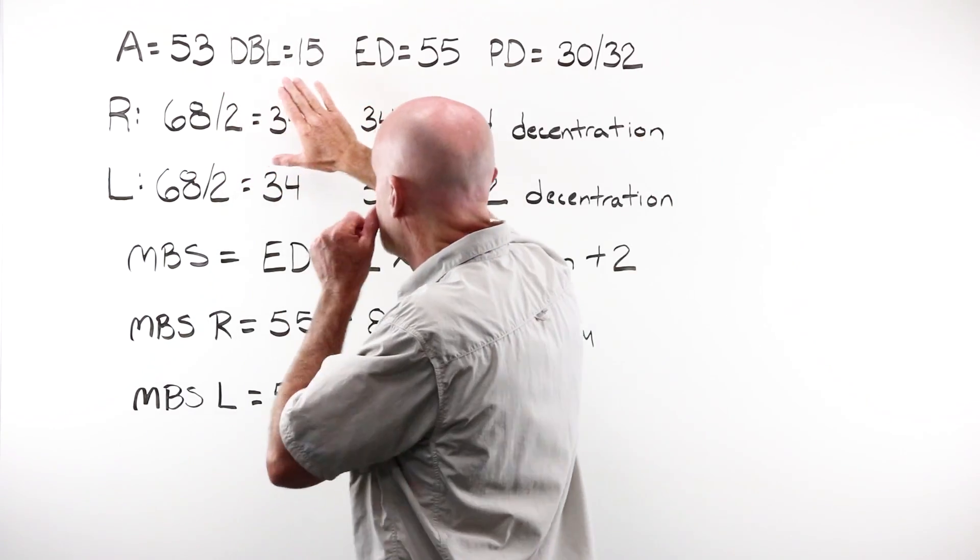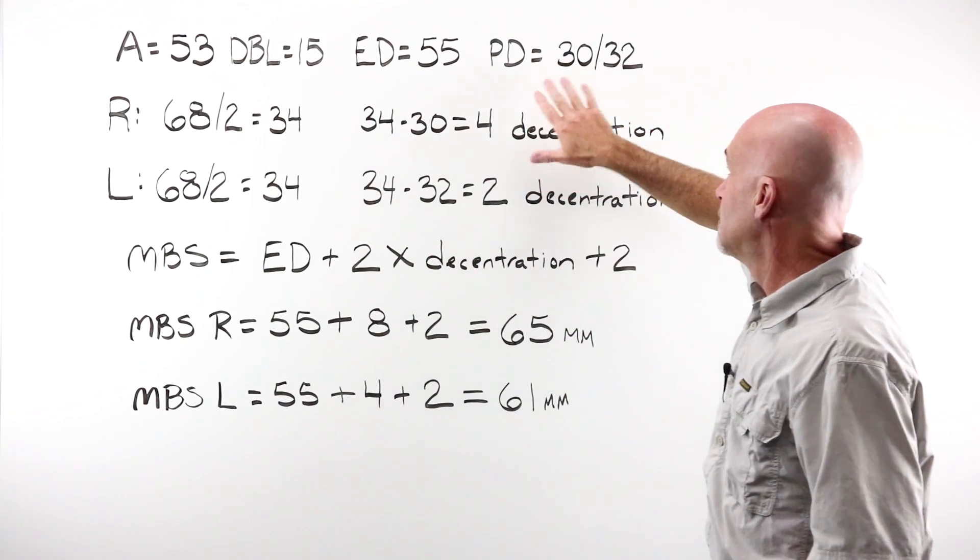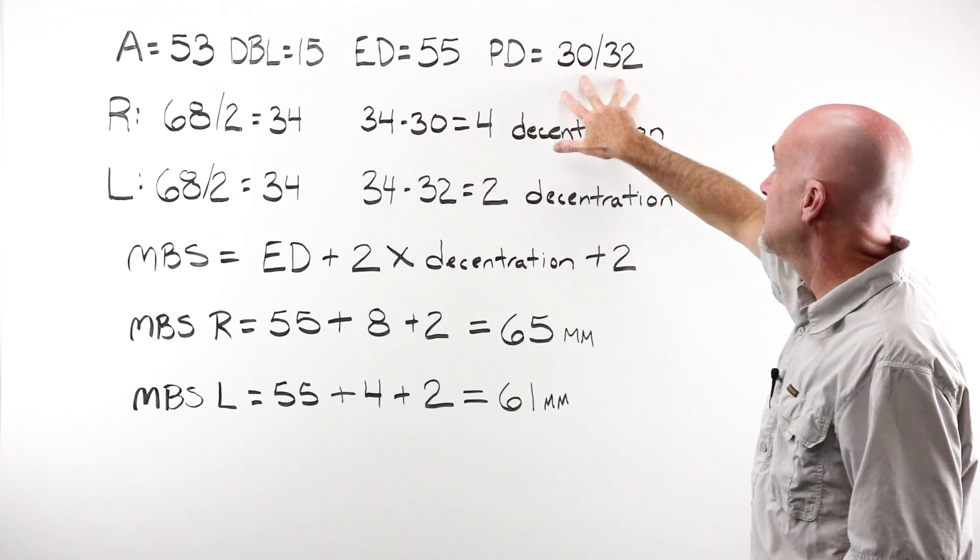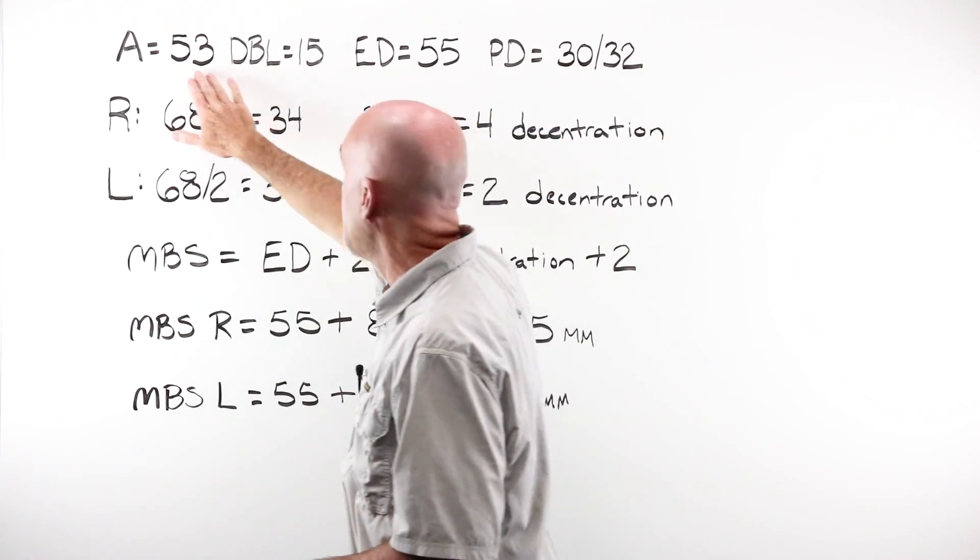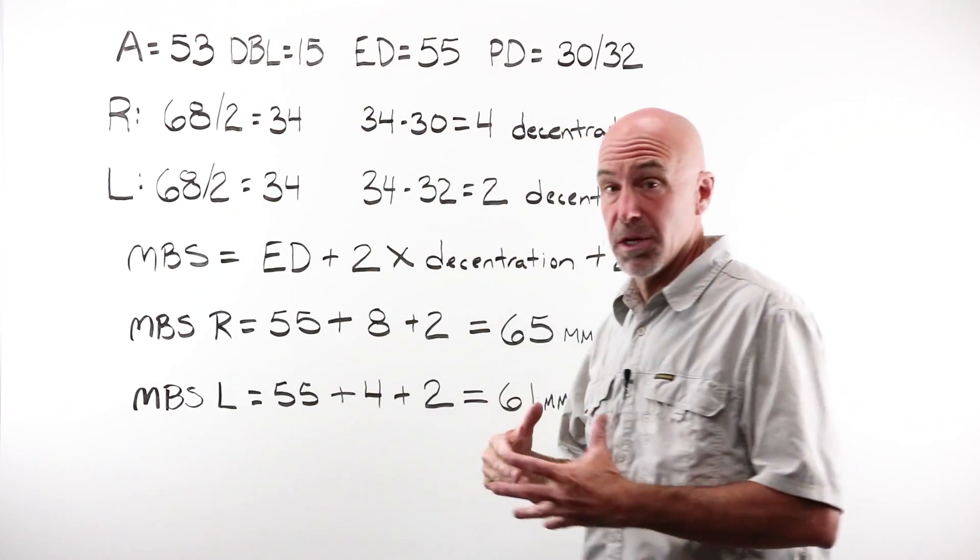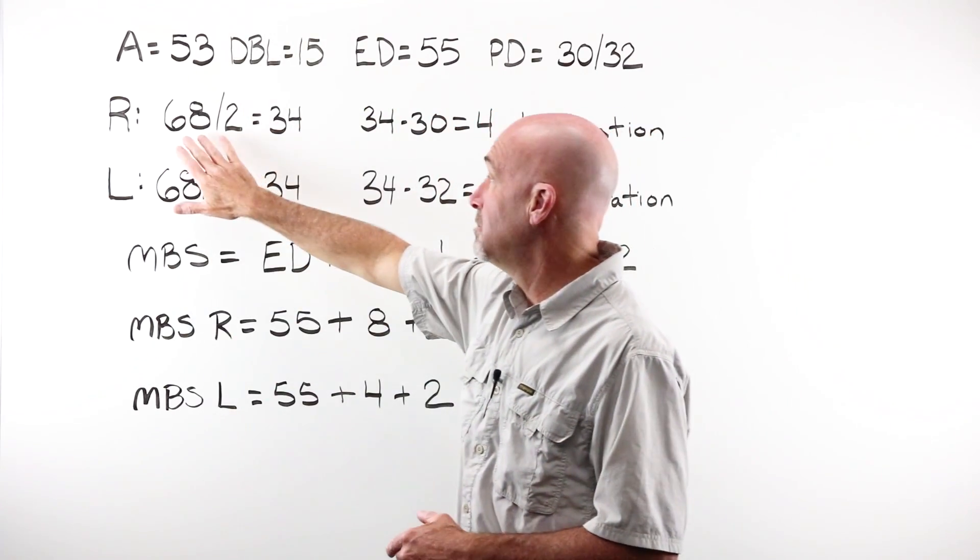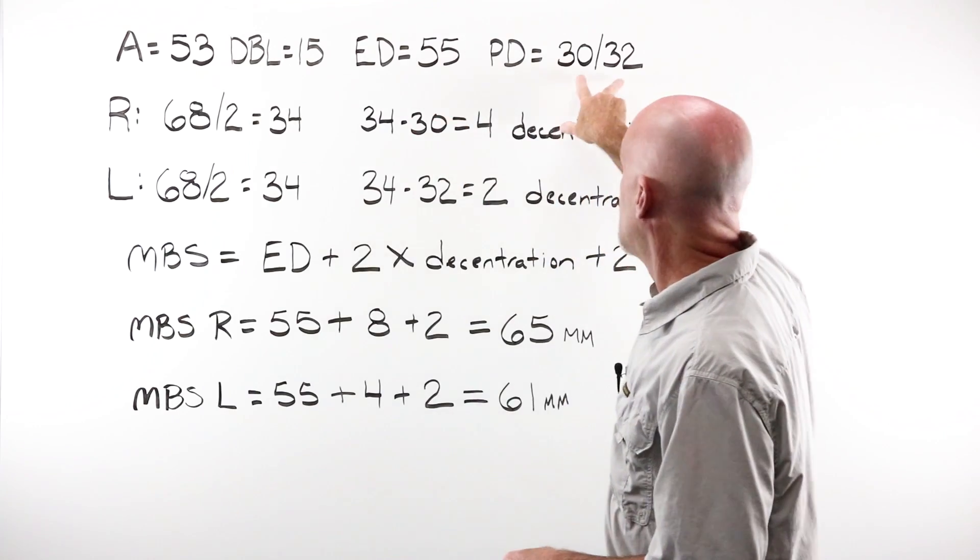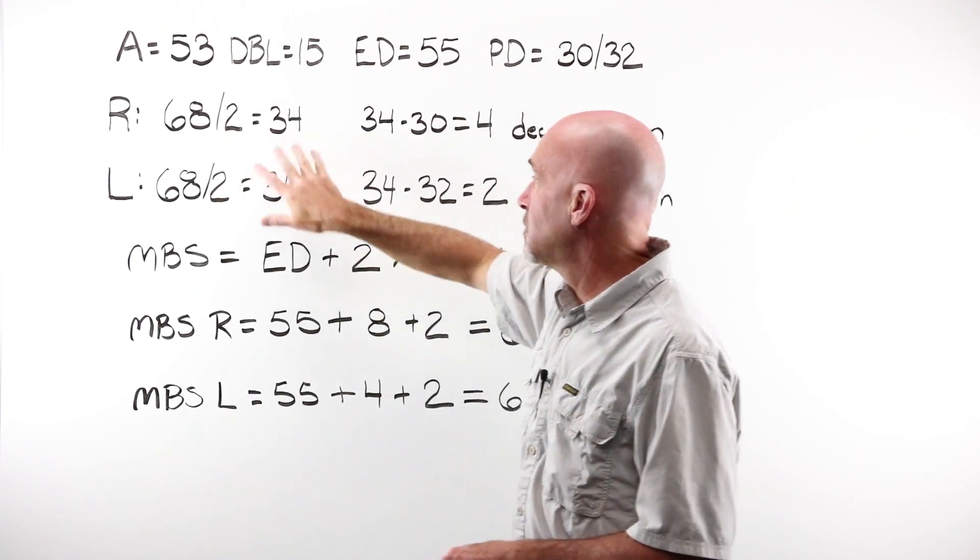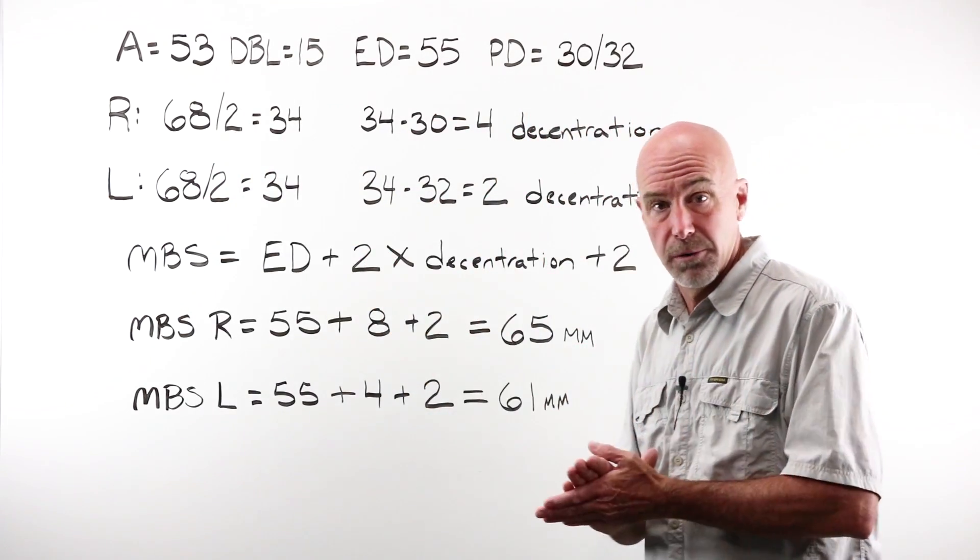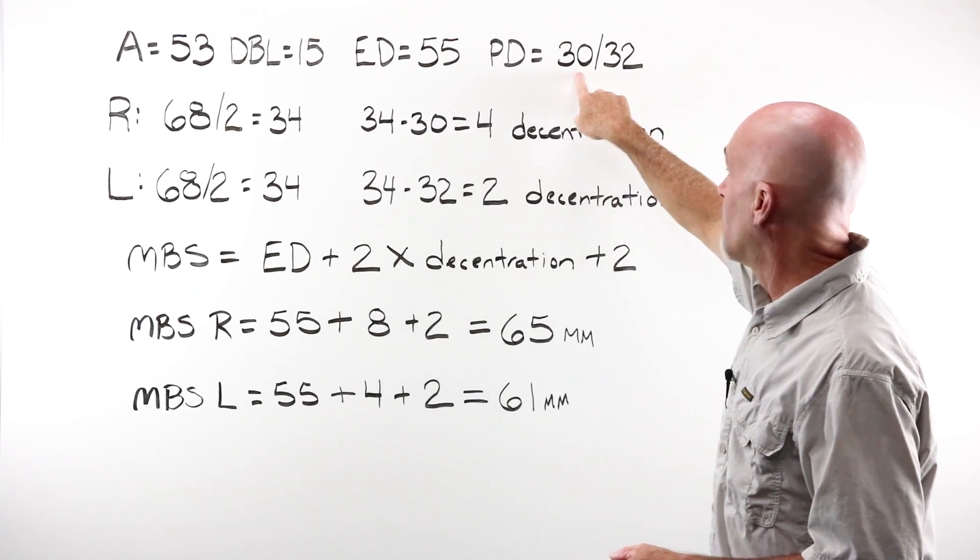If I have an A of 53, a DBL of 15, an ED of 55, and a monocular PD of 30-32. My A and my DBL together give me my frame PD. My frame PD would be 68. Because it's a monocular PD, I divide that by two, and I have 34-34.